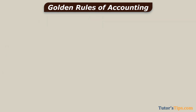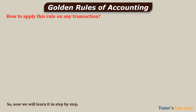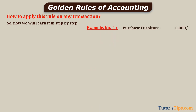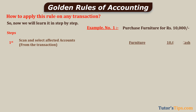After understanding the types of accounts and rules, a question arises: how do we apply these rules to any transaction? We will learn it step by step. First, we take the example of the Real Account. Example number one: purchase furniture for 10,000. Step one: scan and select affected accounts from the transaction. We get the first account as furniture and the second as cash.